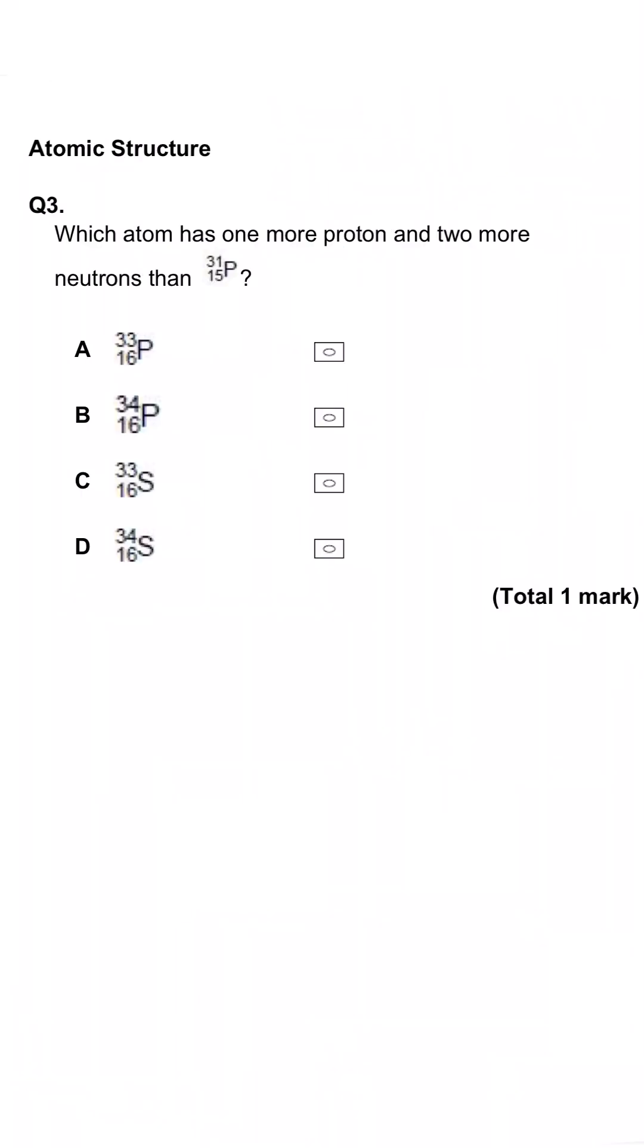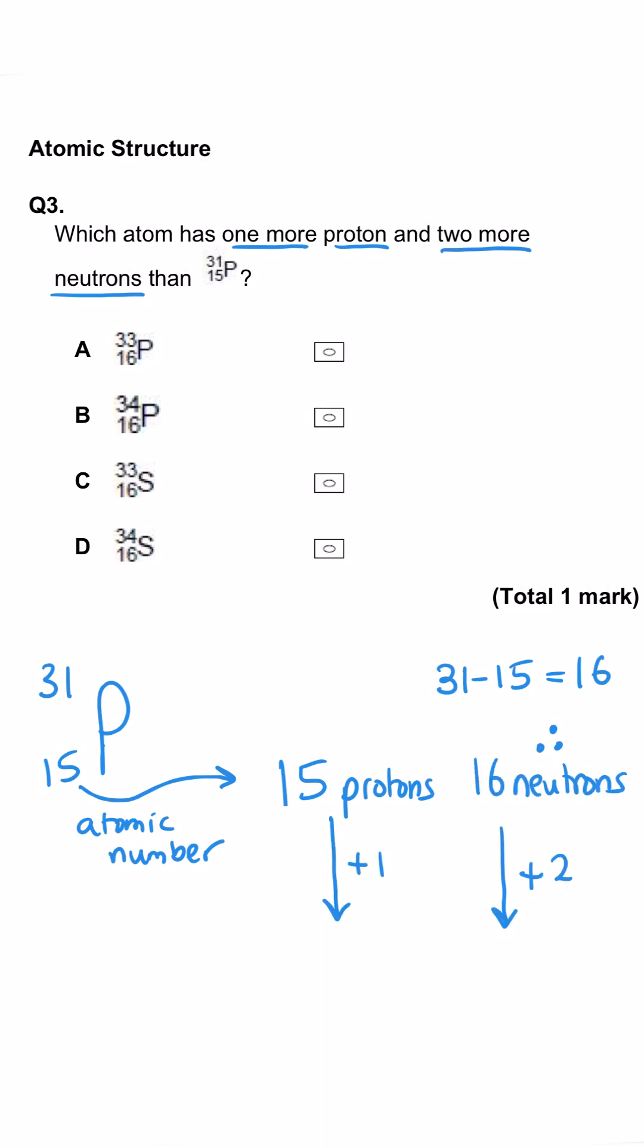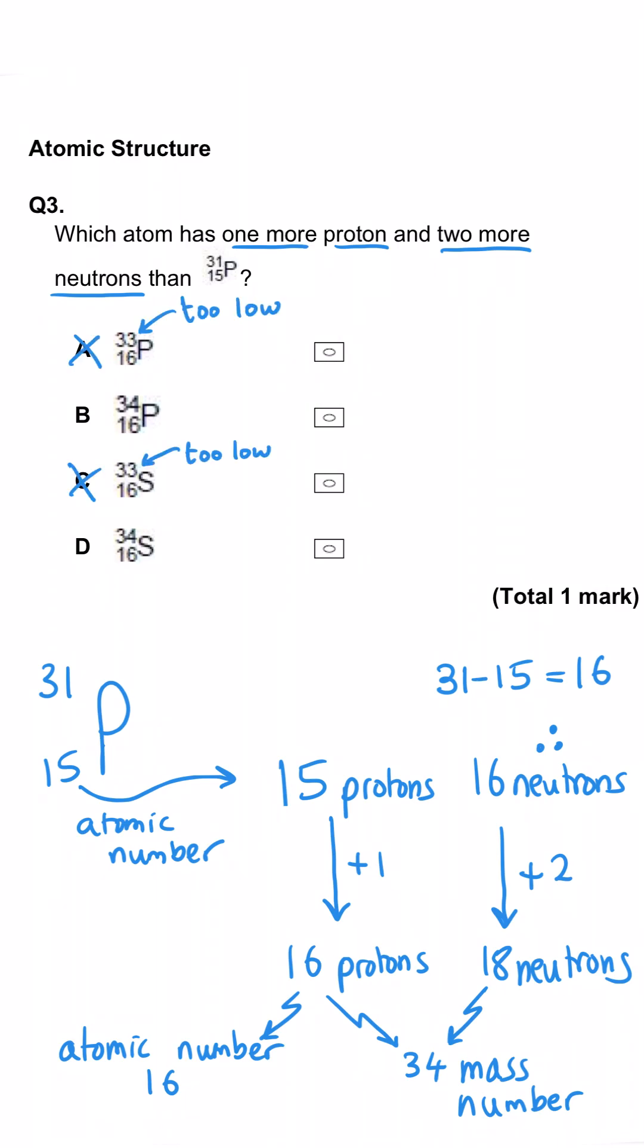This question is about subatomic particles and element symbols. We are asked which of our options has one more proton and two more neutrons than this phosphorus atom here. Well this phosphorus atom with its atomic number of 15 has got 15 protons and 31 minus 15 gives us 16 neutrons. So that means that our correct answer needs to have 16 protons and 18 neutrons. So this means that it will have an atomic number of 16, which is all of them, and a mass number of 34.